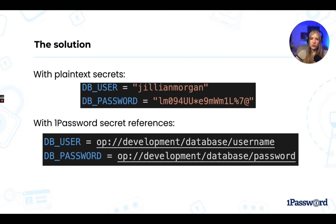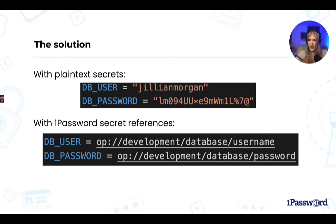Let me show you what that looks like in code. In our environment file, instead of writing out our plain text credentials, we can replace it with a reference to where these secrets can be found in 1Password. In my example, I prepend the reference with op:// so that the 1Password CLI knows what content to replace. 'Development' is the 1Password vault I want to access, 'database' is the item I want to access, and then 'username' and 'password' are the fields I would like to assign to the db_user and db_password variables respectively.